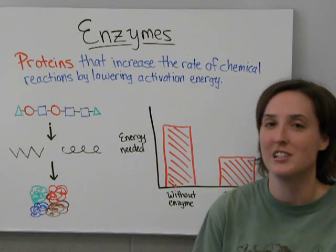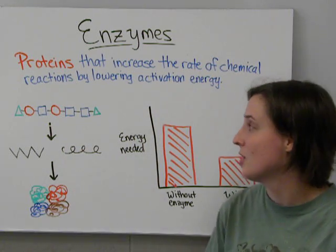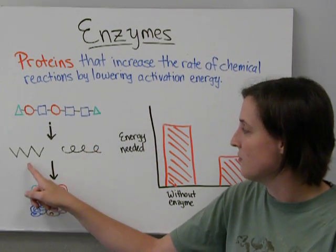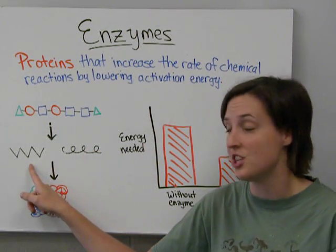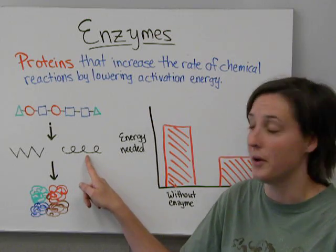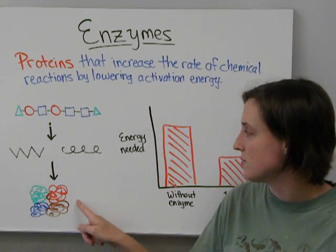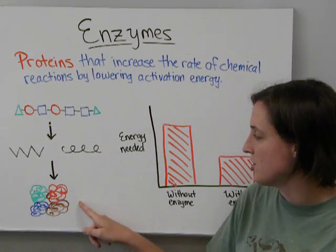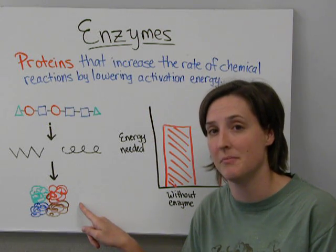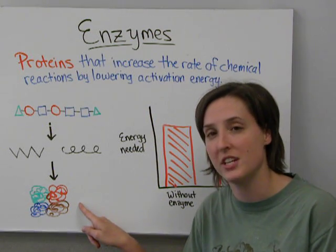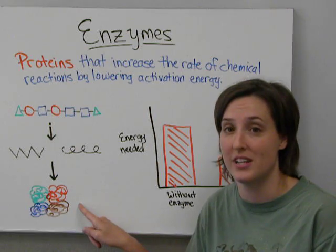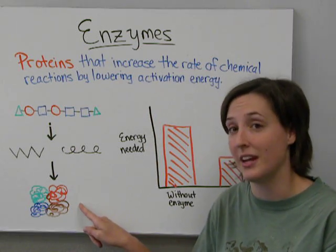Remember, when we talked about proteins, proteins are strings of amino acids that fold up into either a beta-pleated sheet or an alpha coil. Those coils or sheets form subunits which make one whole protein. That protein is functional, and then it can work as whatever it needs to, including enzymes.